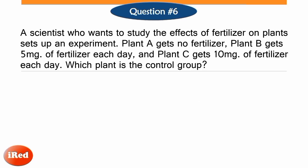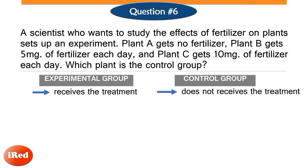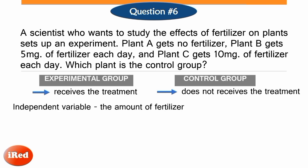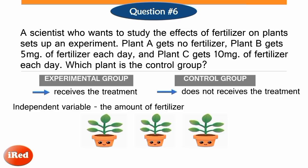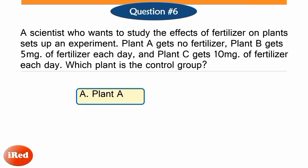In an experiment, scientists compare an experimental group and a control group that are identical in all aspects except one. An experimental group receives the treatment whose effect researchers wish to study, whereas a control group does not receive the treatment. The control group is not exposed to the independent variable under investigation, providing a baseline against which changes in the experimental group can be compared. In this problem, the independent variable is the amount of fertilizer. Plant A does not receive fertilizer, while both plant B and C receive fertilizer. So plant A is the control group, whereas the experimental groups are plant B and plant C. Thus, the correct answer is letter A, plant A.